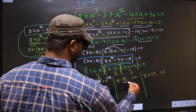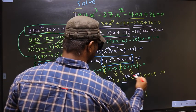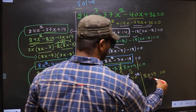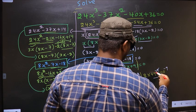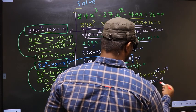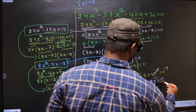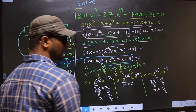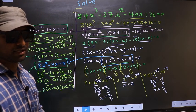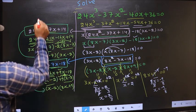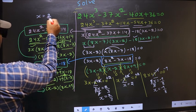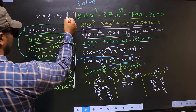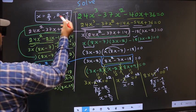For x minus 2 equal to 0: x equals 2. For 8x plus 9 equal to 0: subtract 9 to get 8x equal to minus 9, then divide by 8 to get x equal to minus 9 by 8. So the x values we got are 2/3, 2, and minus 9/8. This is our answer.